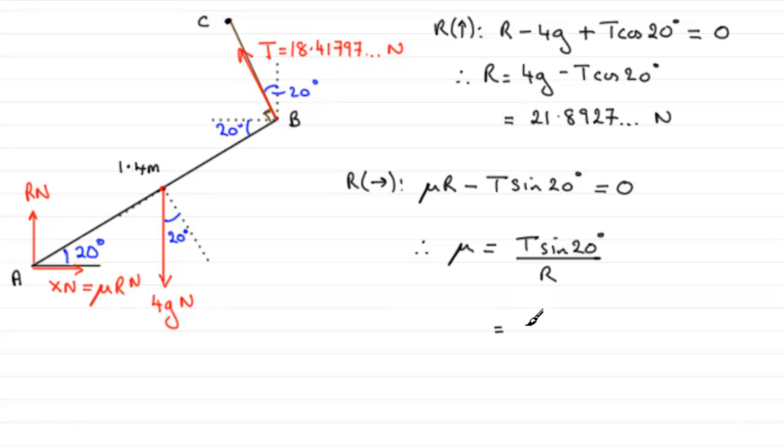And if we round this to 3 significant figures, it's going to be 0.288 to 3 significant figures. OK?